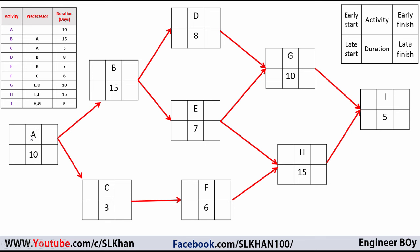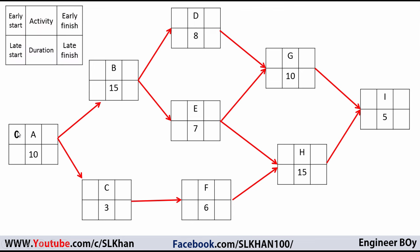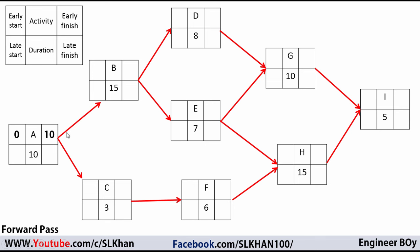Focusing on Activity A: the early start is zero, because it is the start of the project. The early finish equals the early start plus the duration — zero plus 10 equals 10. This process is known as the forward pass method.